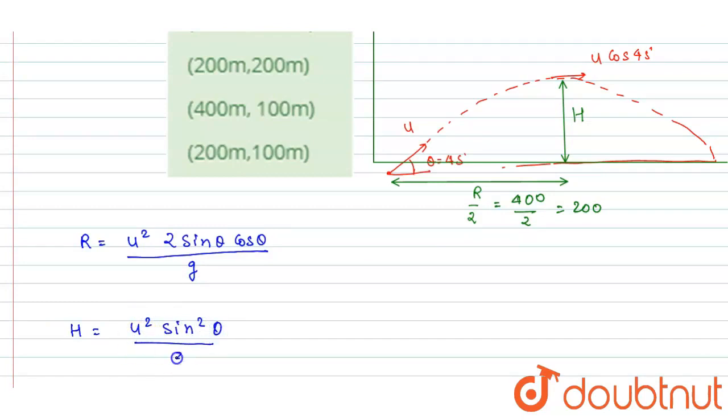it will be u² by g, u² sin θ by g will get cancelled out, right? So I will write sin θ by 2 will be left from H, and here also u² sin θ by g will get cancelled out